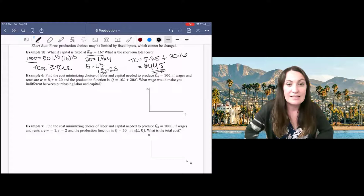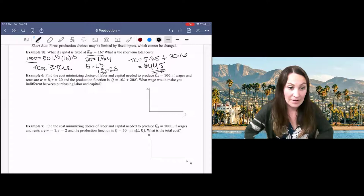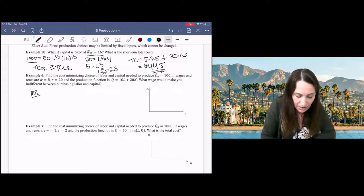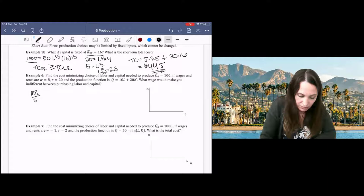Instead, we need to figure out which of these inputs give us the biggest bang for our buck. So we'd like to know which gives us the largest marginal product per dollar. So we'll take the marginal product of labor divided by the wage and compare that to the marginal product of capital divided by the rent.